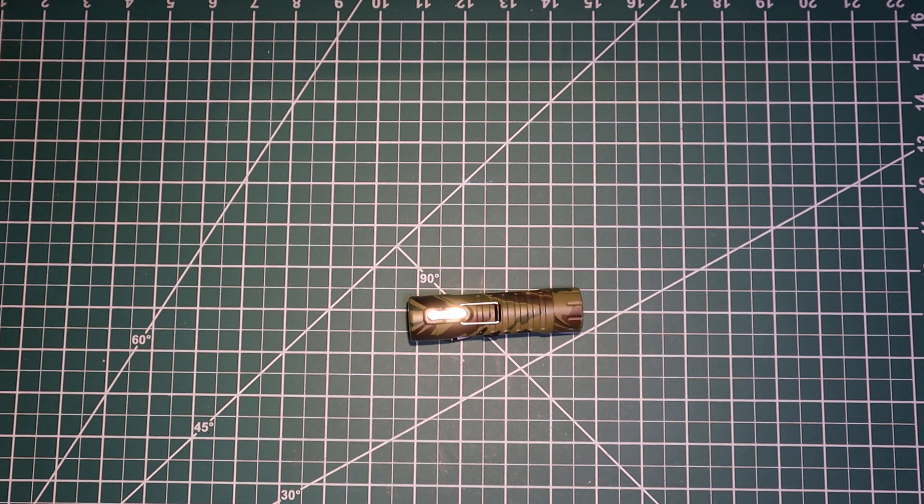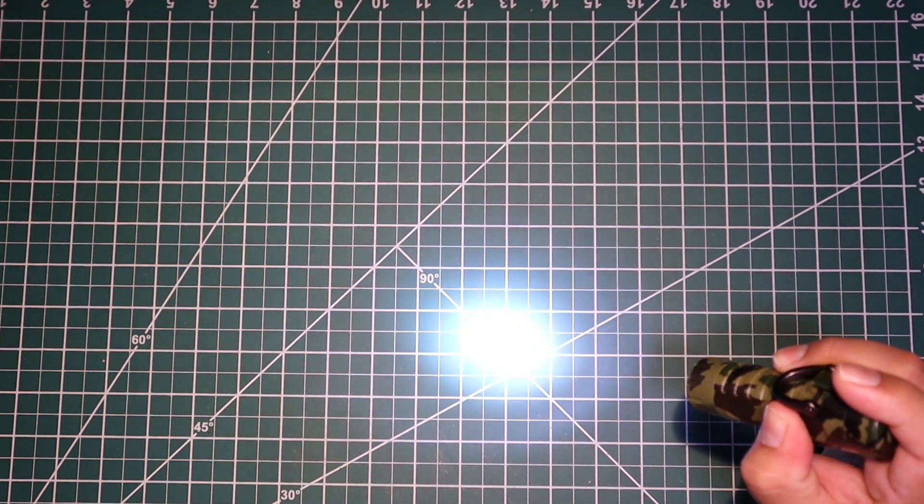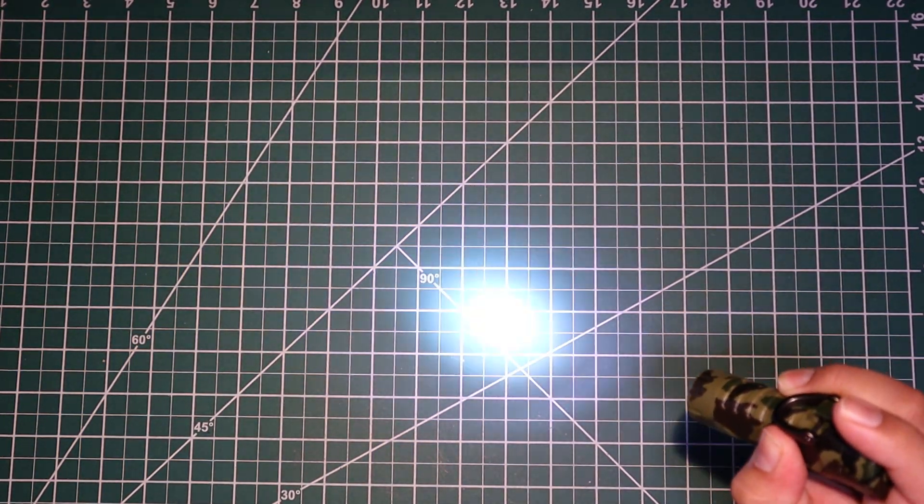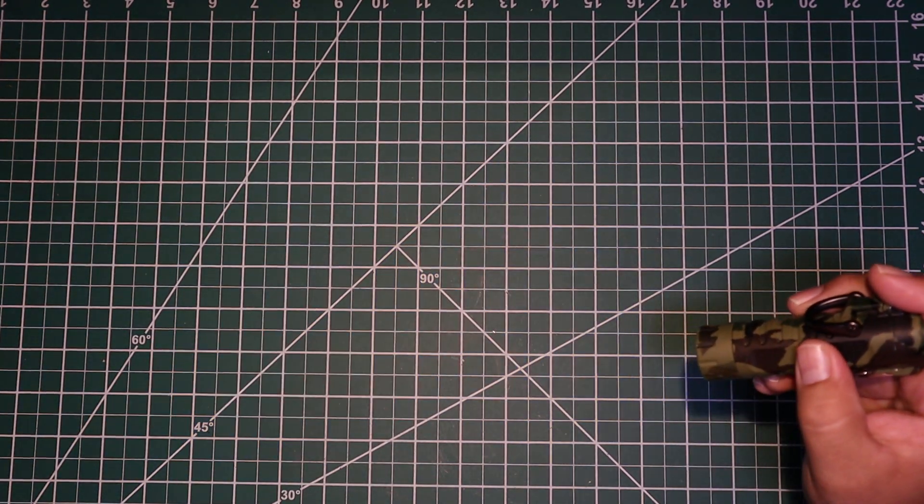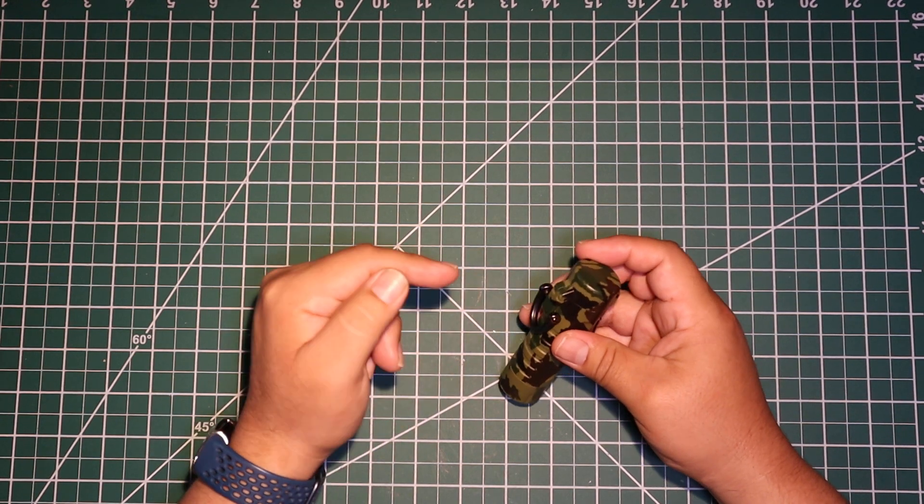And let me show you how it works. So this is a flashlight - it has different modes. It's got high, it's got low, and obviously it's got a strobe light. So that's that. I added this d-ring because it comes with a lanyard for it.